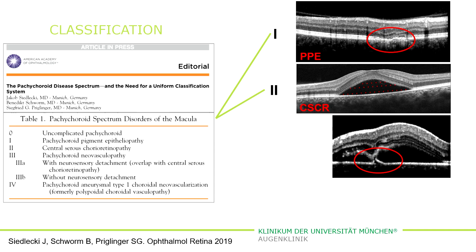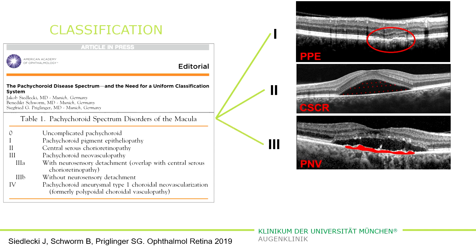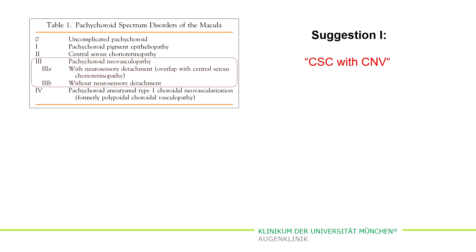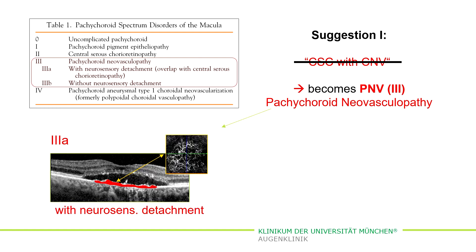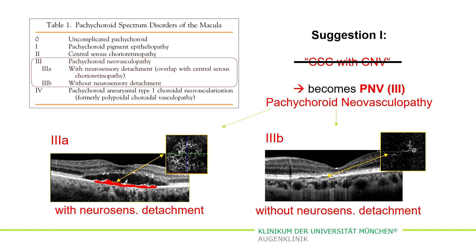In 25 to 30% of patients, MNV develops. And we don't call this MNV CSC with CNV — we call it Pachychoroid neovasculopathy, which can be seen with or without subretinal fluid.